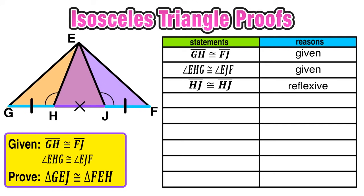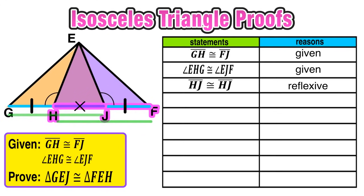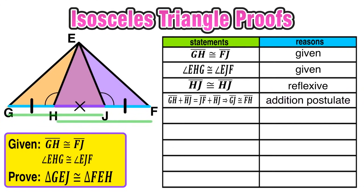Now think about the bases of those two overlapping triangles. The base of triangle GEJ is formed by combining GH the blue segment with HJ the purple segment. Similarly, the base of triangle FEH is formed by segment JF the blue segment and HJ the purple segment. Since the base of both triangles can be formed by adding congruent segments, we say that GH plus HJ is equal to JF plus HJ, which implies that the bases of the triangles are the same — that GJ is congruent to FH. Our reason for that is the addition postulate.